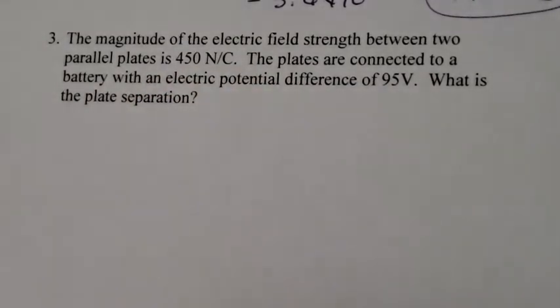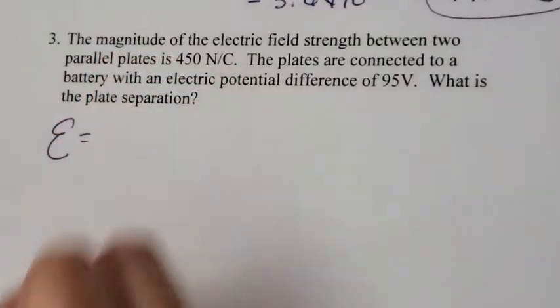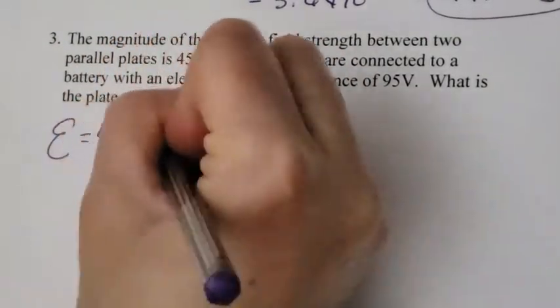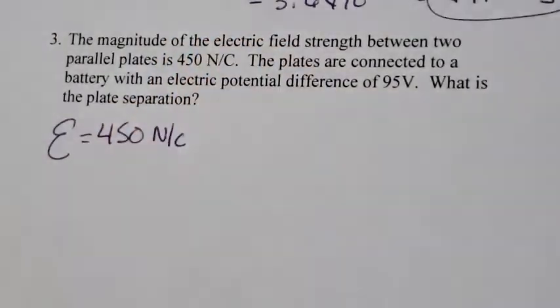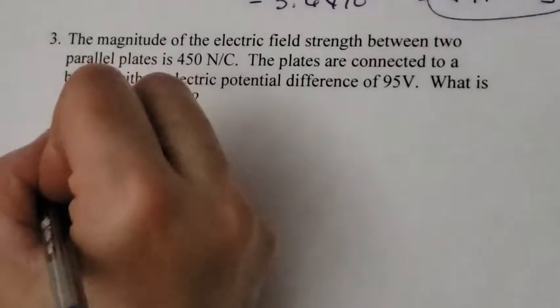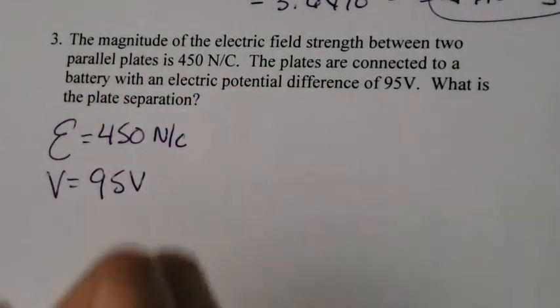Let's write down what we know. So we know the electrical field strength, that's that kind of backwards 3, is 450 newtons per coulomb. We know the voltage is 95, and we're looking for R.